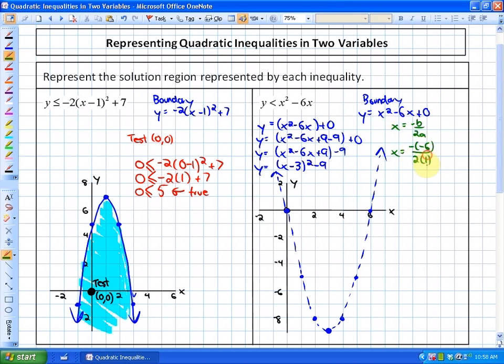Which would give me an x-coordinate of 6/2, which is 3. And then I substitute it back in to get the y-coordinate, and y would equal 3² - 6(3) + 0, which is y = 9 - 18, which is y = -9. So our vertex would be at (3, -9), which we've already noticed right here. So either way you do it, your boundary will look like this.